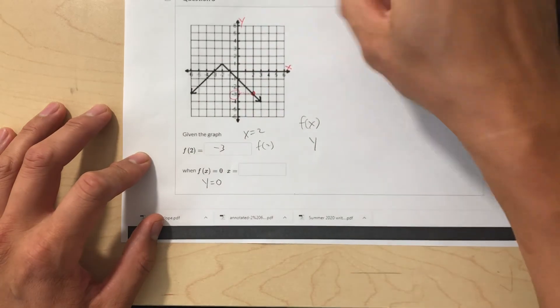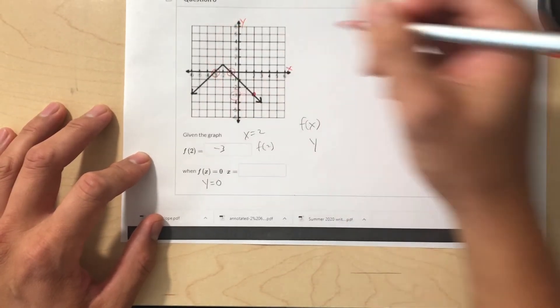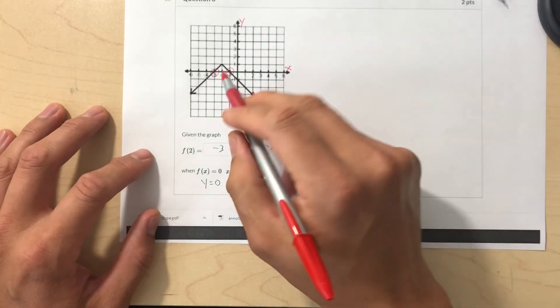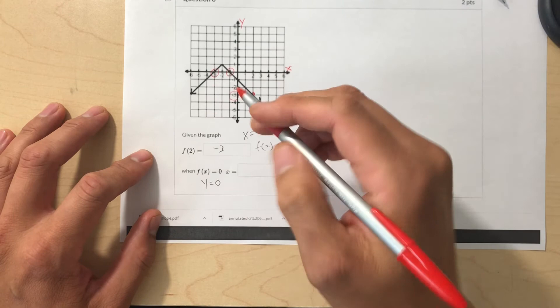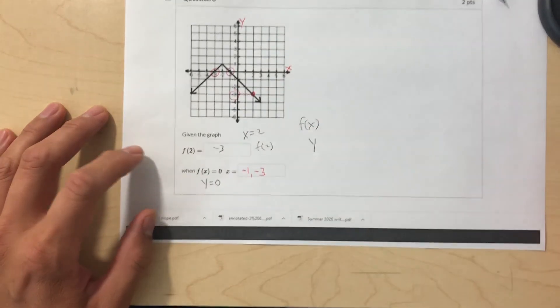So there's actually two of them, here and here. So x has two answers when y is 0. And this is negative 3 and negative 1, so x is negative 1 and negative 3.